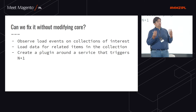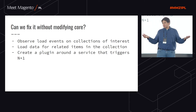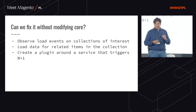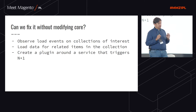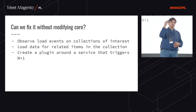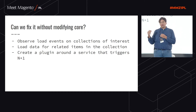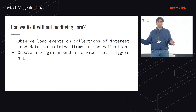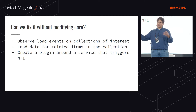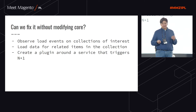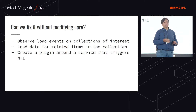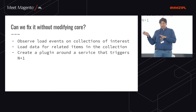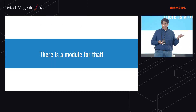But can we fix these problems without actually modifying the core? The answer is yes — otherwise there would be no talk like this. You can observe load events: every single list of data loaded in Magento is usually loaded through a collection, and you can observe that event, preload the data that you anticipate Magento services will use, and customize Magento so that expensive operations won't be triggered because you already have the data. There's already a module for that — it's called Magento 2 Product Preloader, it's a 1.0 release, compatible with the most recent Magento version.